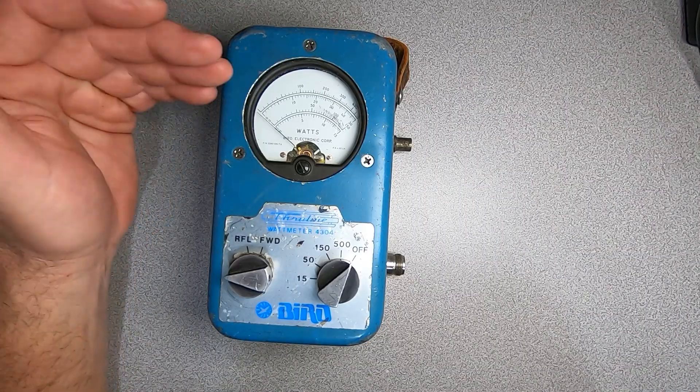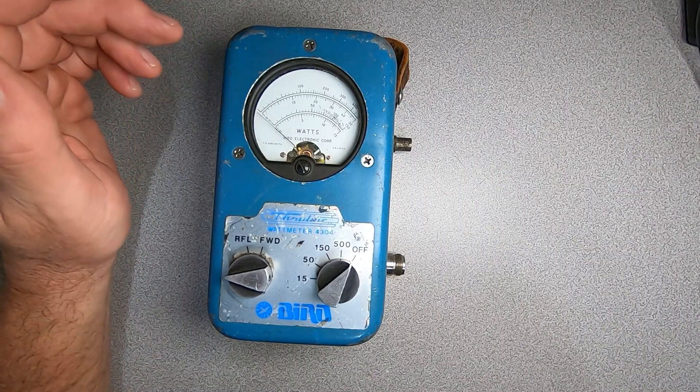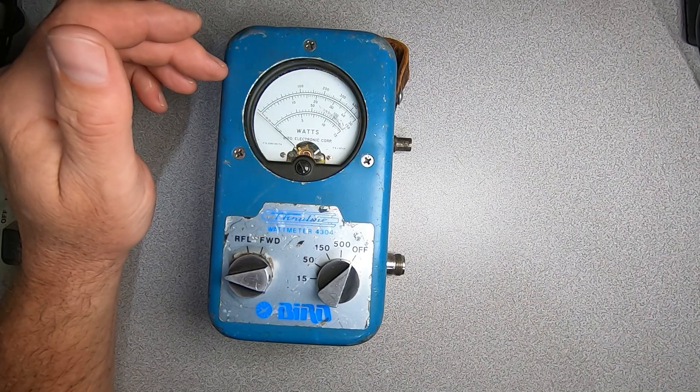And although this isn't a purist Bird 43, it is in the family. On the bench, we have a Bird 4304 directional watt meter.